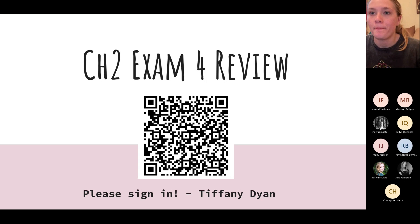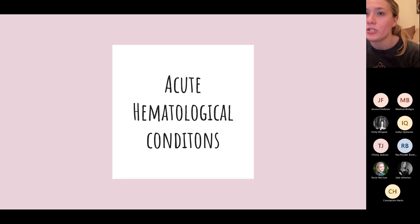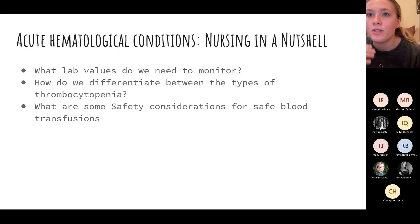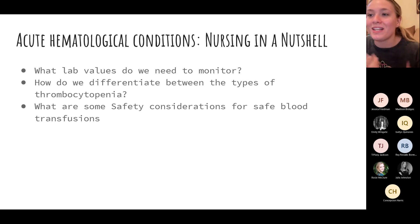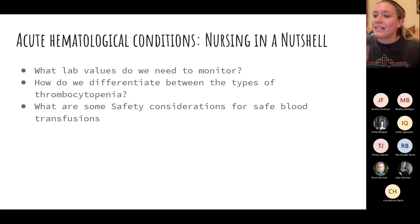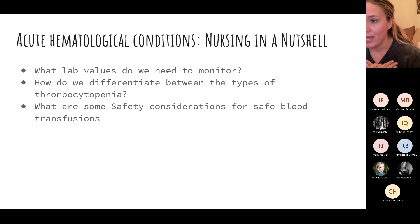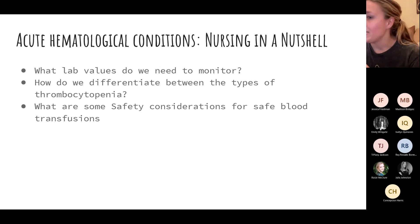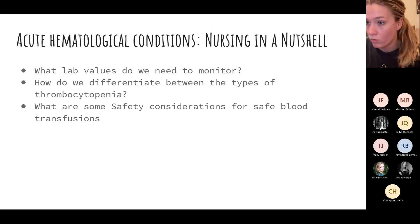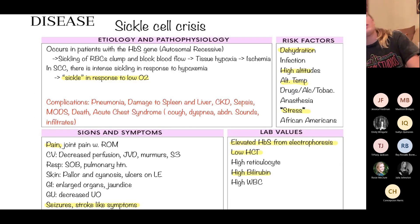Let's begin. We're going to talk about some of our acute hematological conditions, focusing on about two or three. We'll think about blood lab values — lots of them — and we're going to talk about differentiating between the different types of thrombocytopenia and general safety considerations. Licensed practical nurses cannot work with blood products; it is the role of the registered nurse to safely transfuse blood.